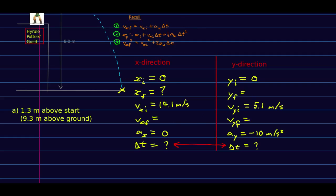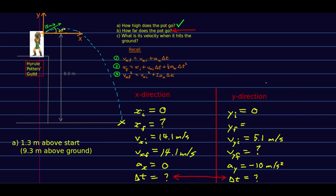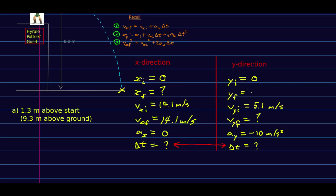The equations cannot see past that moment, so if we're going to use them, we have to use values for just before the impact. Just before the impact, we know that v_xf will still be the same as v_xi because a_x is zero. We don't know v_yf. However, what we do know is y_f. The pot started at zero in y and ends up eight meters below that. We have set y as positive up, so our final value of y is negative eight meters.